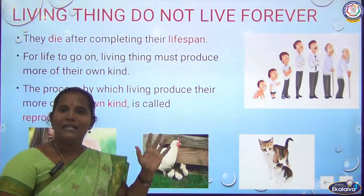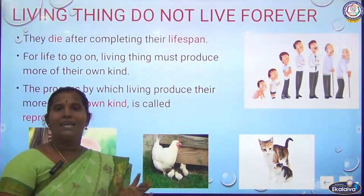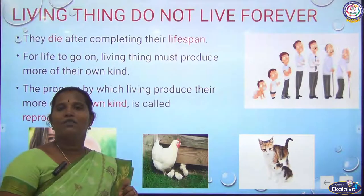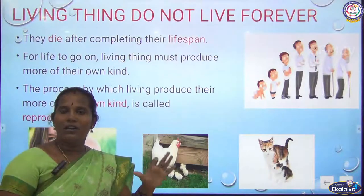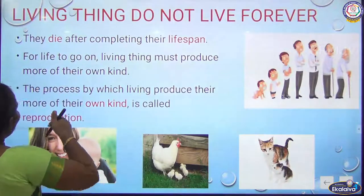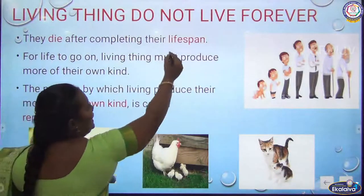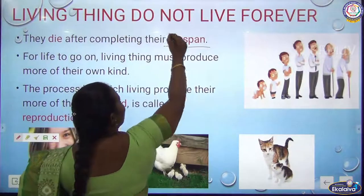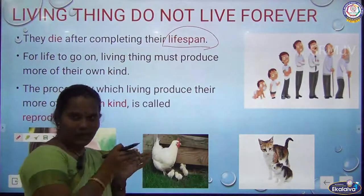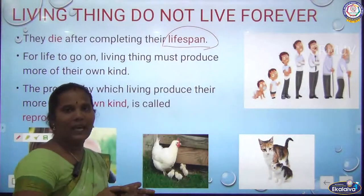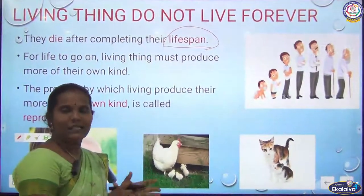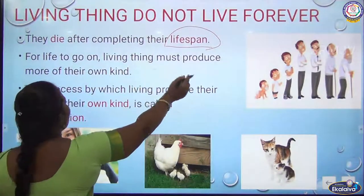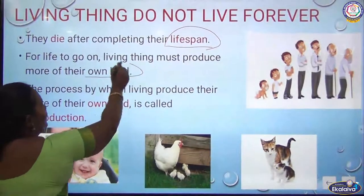Non-living things can last forever, but living things cannot live forever because they have a life span. Life span means the gap between birth and death. For life to go on, living things must reproduce more of their own kind.